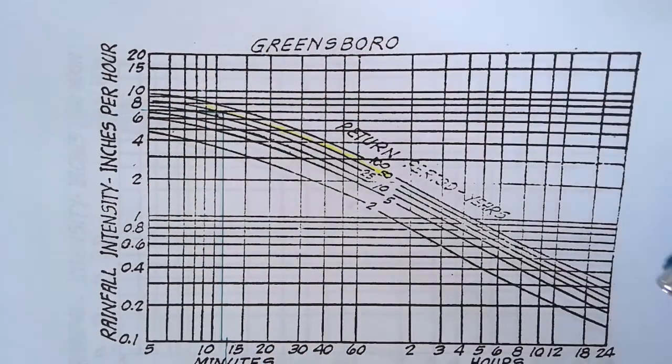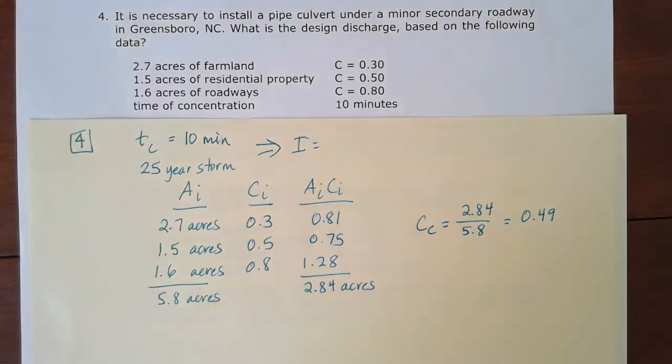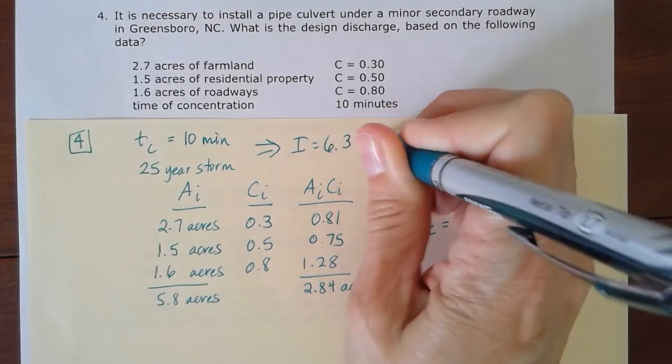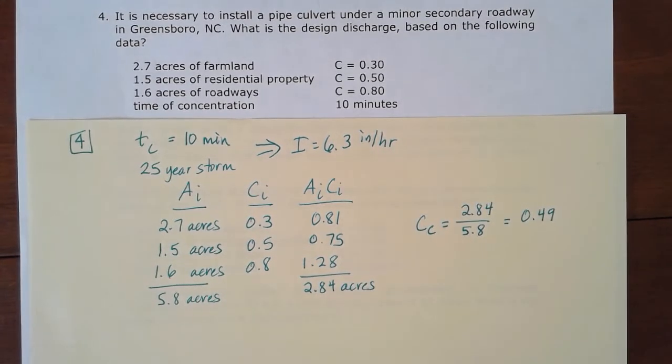But you might have called it something different, but you'll see how that's going to affect my answer. And you should be somewhere around that. So if you get a different answer, it should still be in that ballpark. But I'm going to go ahead and call that intensity a 6.3 inches per hour.